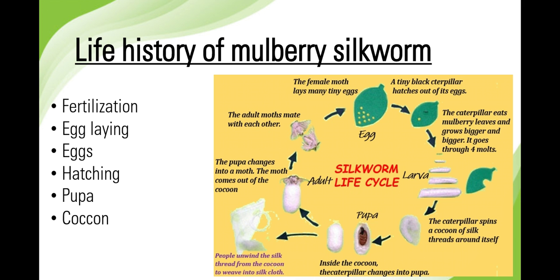The cocoon is the white-colored bed of the pupa. The outer threads are irregular while the inner threads are regular. The binding of thread around the cocoon is achieved by constant round motion of the head of the caterpillar from one side to another. The weight of one cocoon is about 1.8 to 2.2 grams, and the weight of the cocoon shell is 0.45 grams.